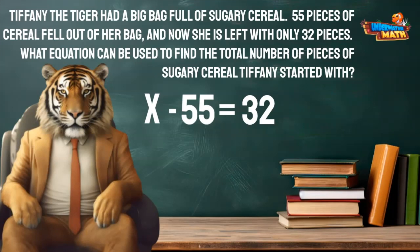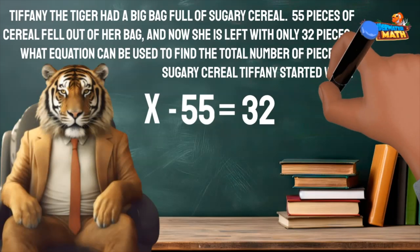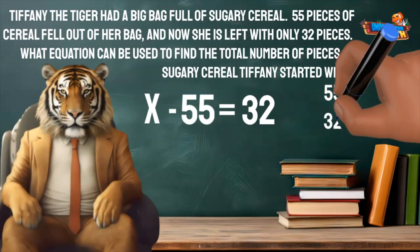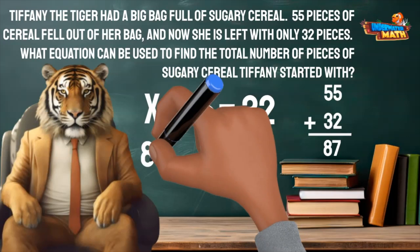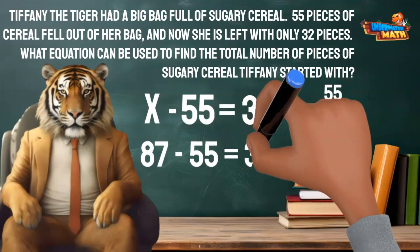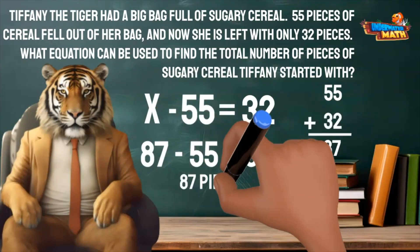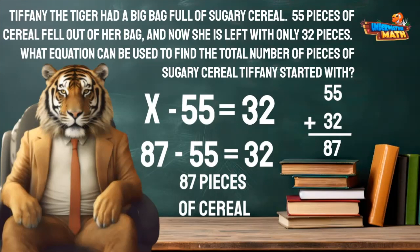Check that equation out. Now let's solve for the unknown to see how many pieces of sugary cereal she started with. What number minus 55 will give me 32? I can use addition to help. The 55 she lost plus the 32 she still has will tell me what she started with. 87. 87 minus 55 equals 32. Tiffany started with 87 pieces of sugary cereal.